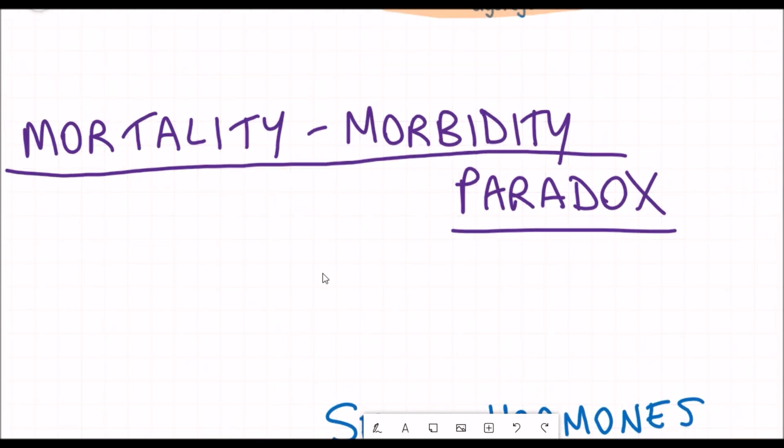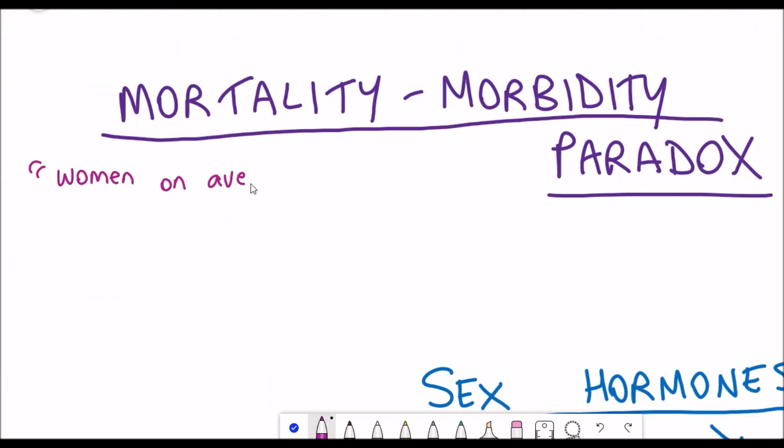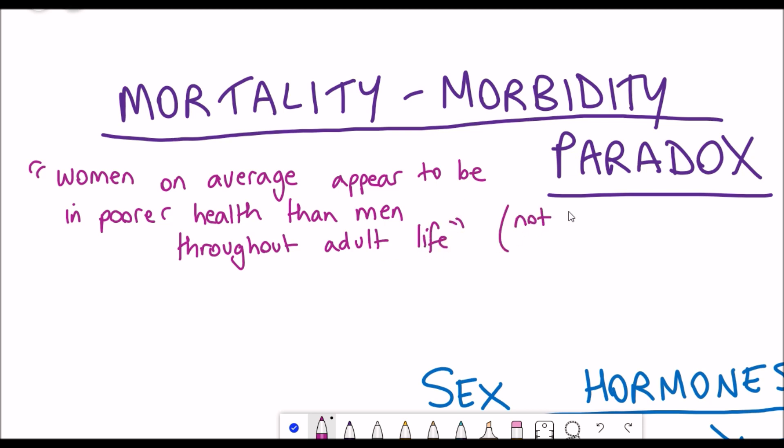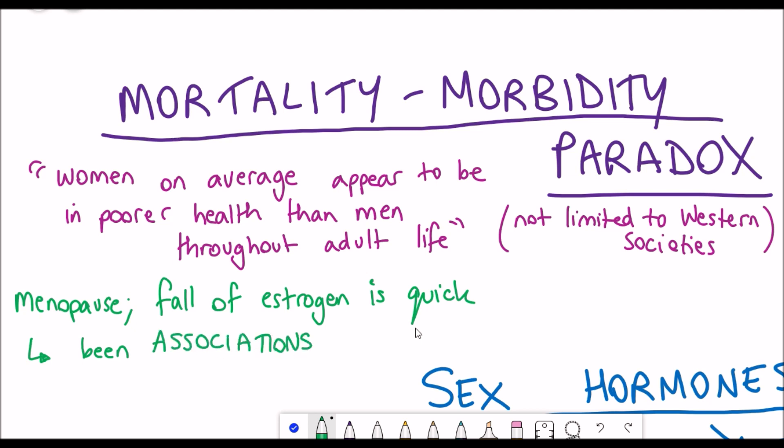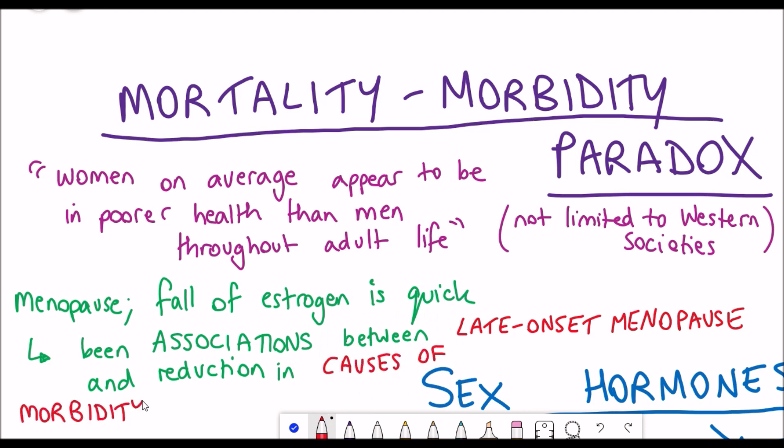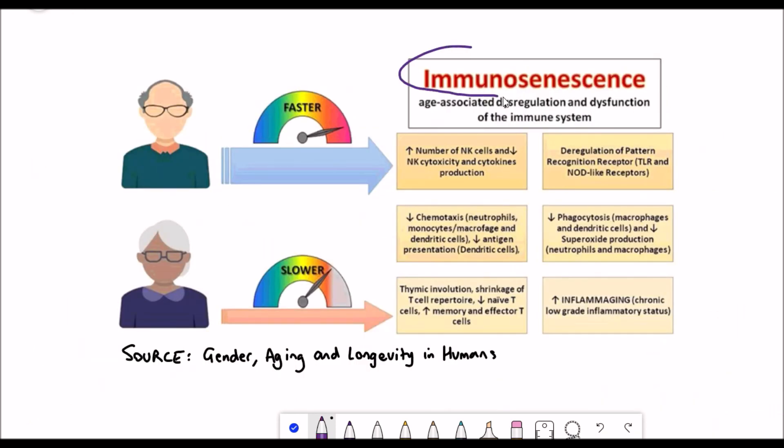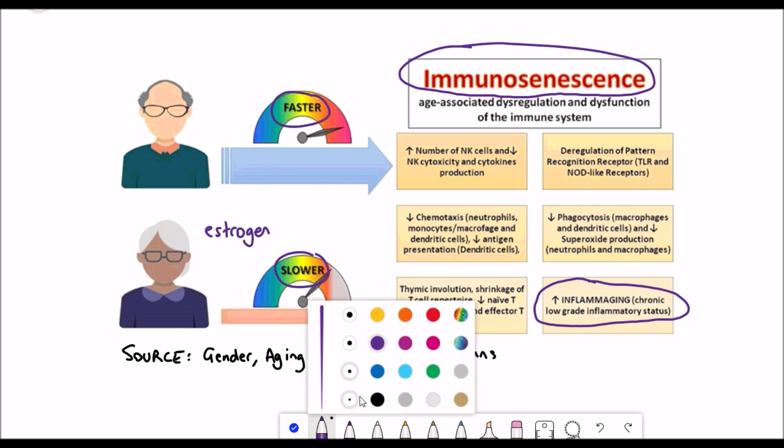But what is pretty well established is in females who go through menopause, there is a rapid reduction in the levels of estrogen. This now brings us back to this mortality morbidity paradox, which is that women on average appear to be in poorer health than men throughout adult life, and this isn't just limited to western societies. So one explanation to explain this paradox could be menopause and this rapid reduction in estrogen levels. There's been various studies that have shown an association between late onset of menopause and a reduction in all causes of morbidity and mortality. Moreover, from this the females who have a later onset of menopause also show lower levels of these inflammatory factors in their plasma, such as interleukin 1 beta and interleukin 6. This kind of relates back to potentially having this lower amount of inflammation, which is the chronic inflammation that's associated while it is one of the hallmarks of aging.